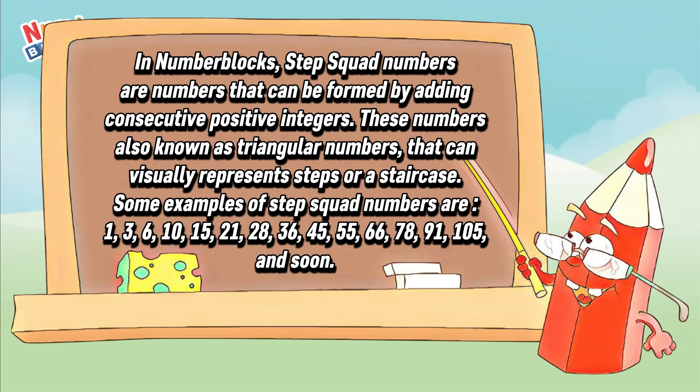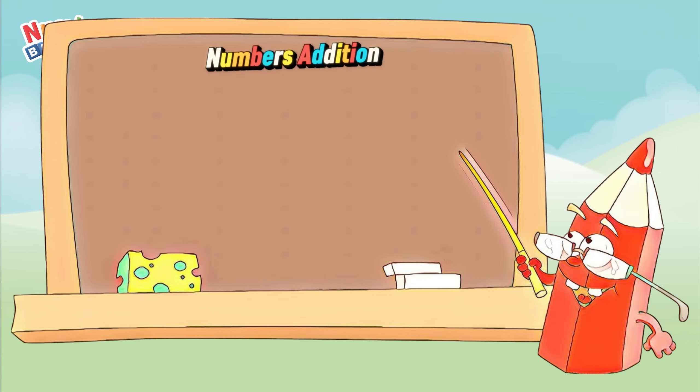Some examples of step squad numbers are one, three, six, ten, fifteen, twenty-one, twenty-eight, thirty-six, forty-five, fifty-five, sixty-six, seventy-eight, ninety-one, one hundred and five, and so on. Now join me and let's do number addition.